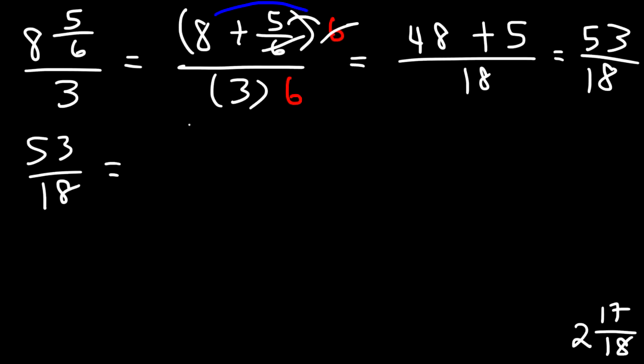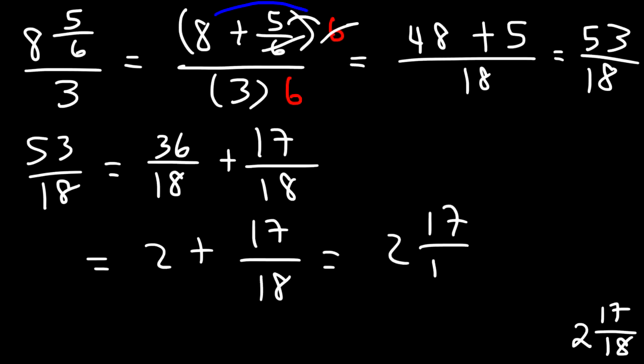The highest multiple of 18 below 53 is 36. And we know that 53 minus 36 is 17. So this will give us the same answer. 36 divided by 18 is 2. And so it's 2 plus 17 over 18, which is 2 and 17 over 18.